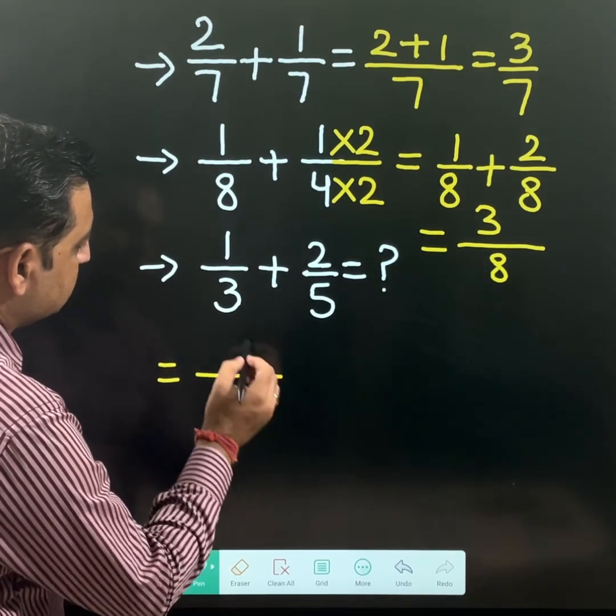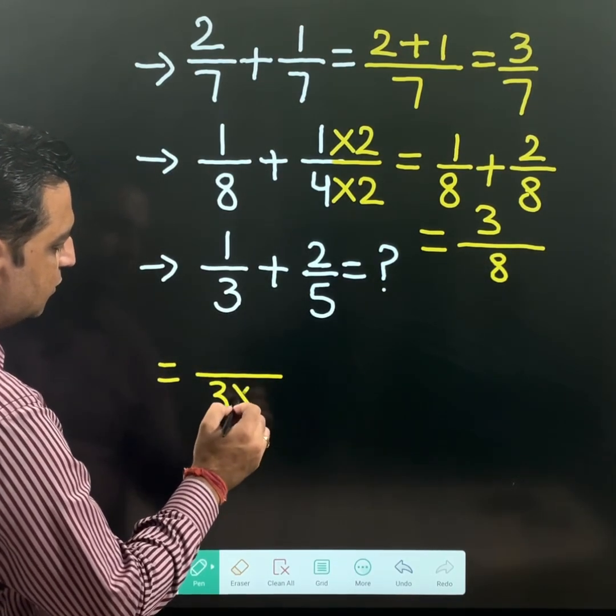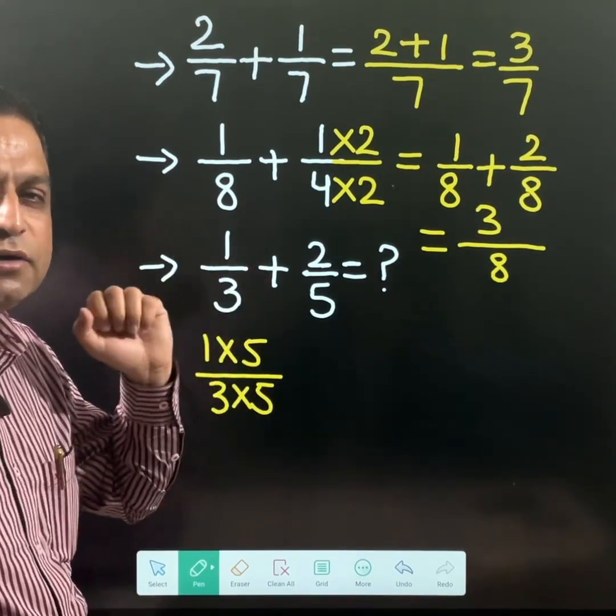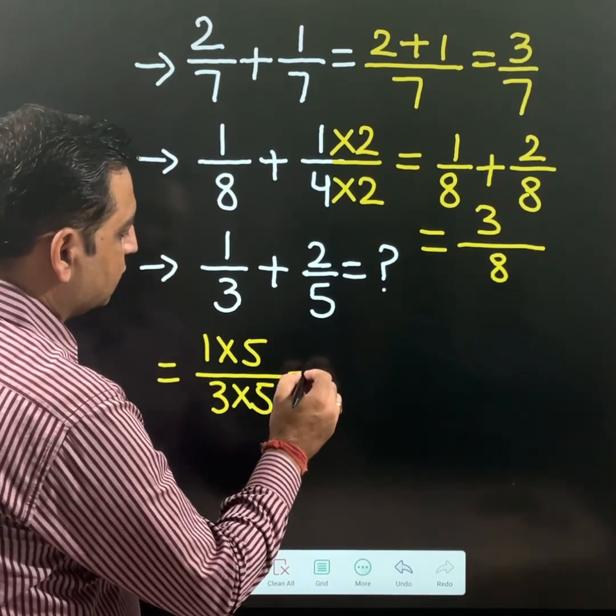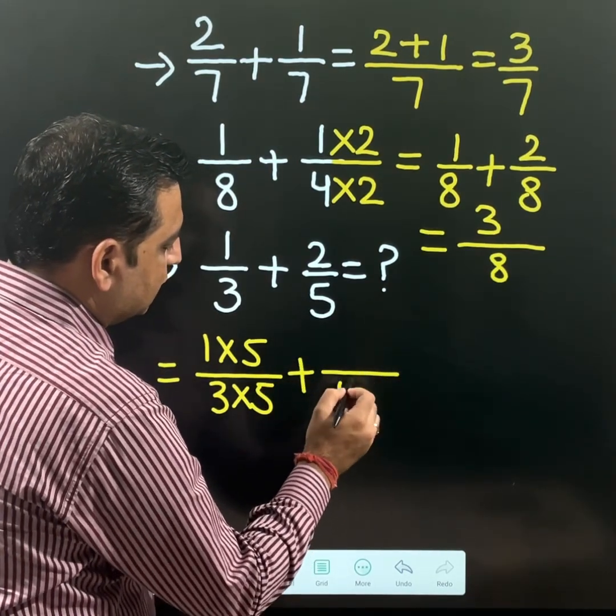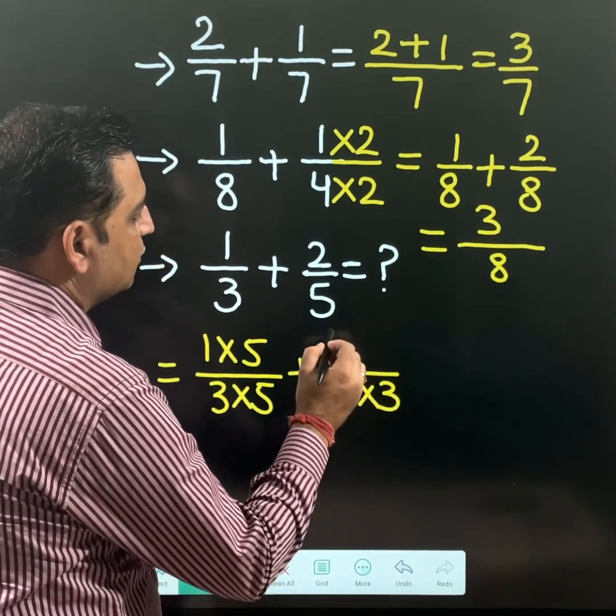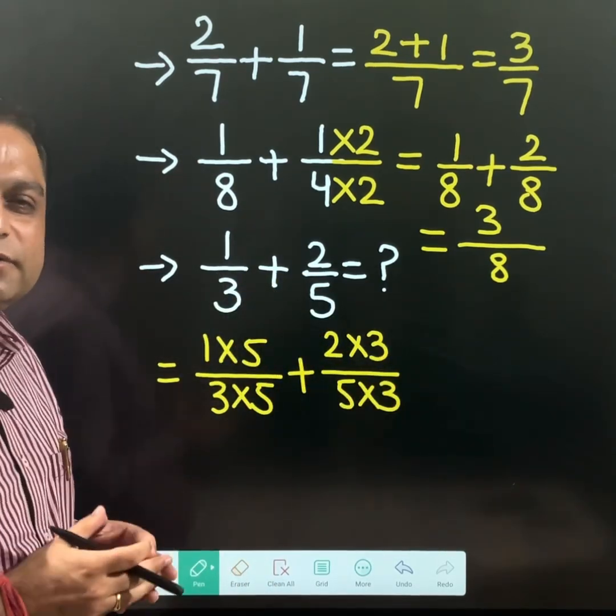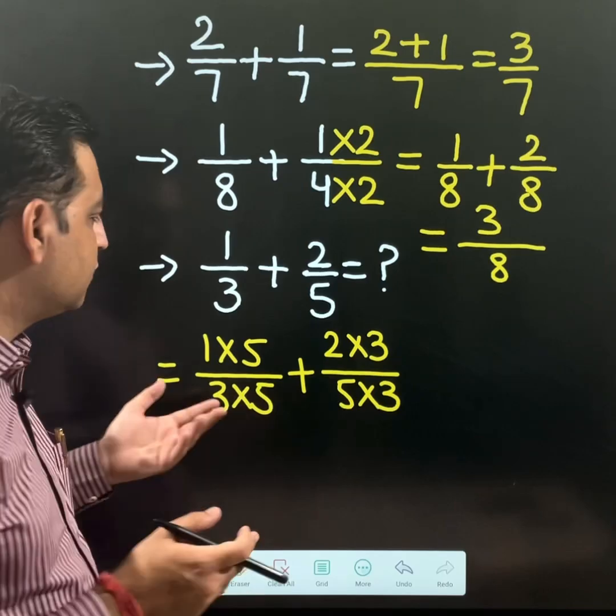How can we make the denominator 15? I am going to show you the step. This 3 is multiplied by 5, but at the same time you need to multiply the numerator also. And here 5 is multiplied by 3, and at the same time you need to multiply the numerator also by 3. And we are almost near to our result.